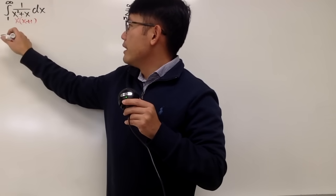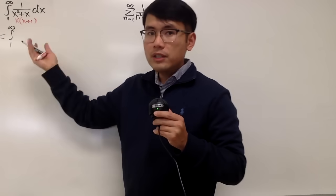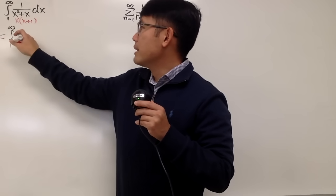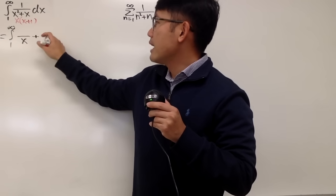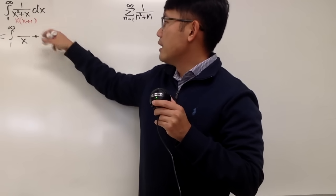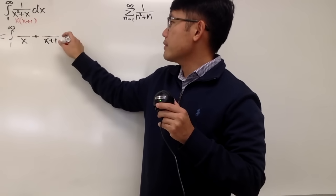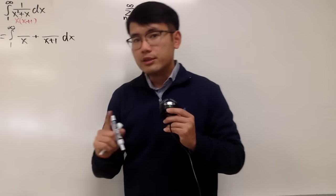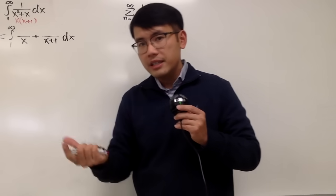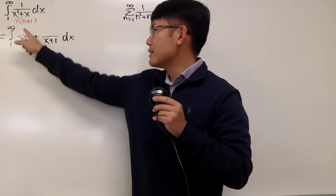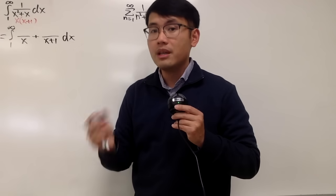Let's go ahead and look at the integral from 1 to infinity. For the first fraction, we must have some number over x, plus the other fraction, some number over x plus 1, and then the dx. As you can see, these two are just linear factors, so the numerators will just be numbers.